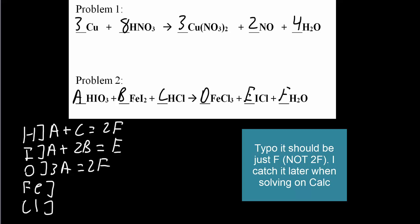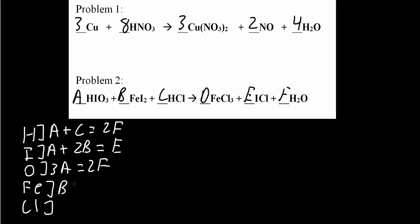Next, Fe. So we have one here for B is equal to, we have a D, that's it.